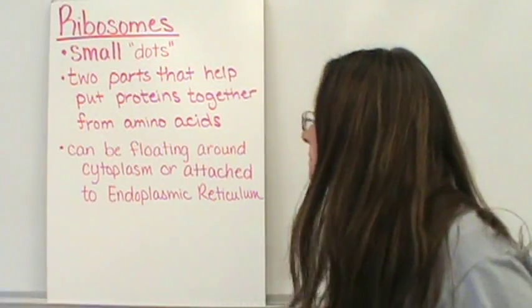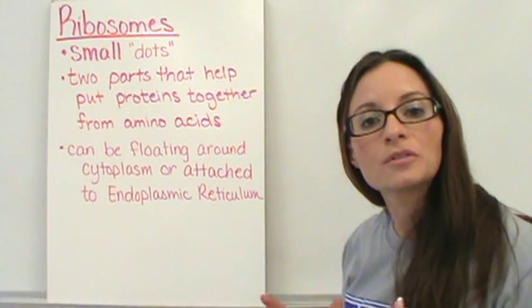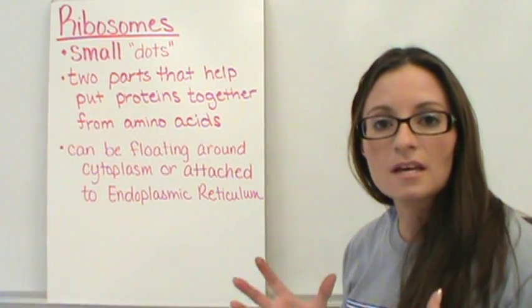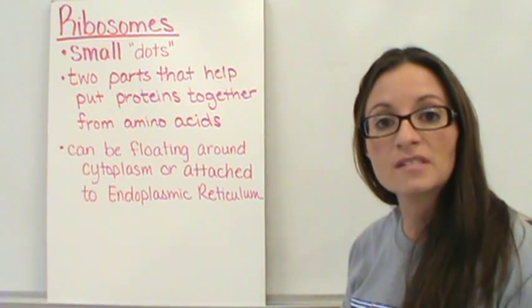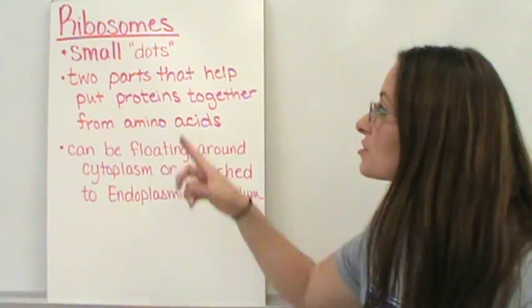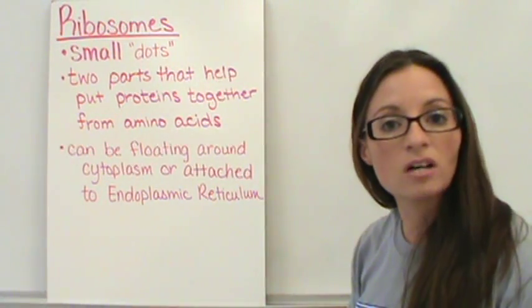So let's start with the ribosomes. First of all, when you look at a cell and you see a diagram of a cell, for the most part your ribosomes are just going to look like small dots. They are extremely small.